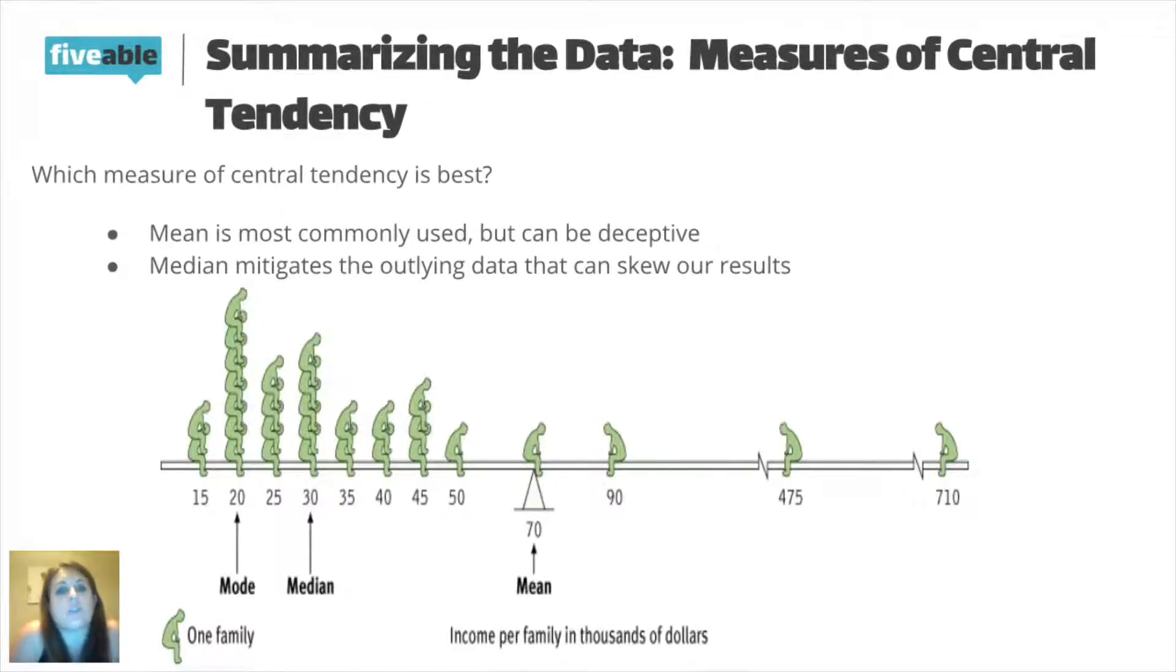The median, which is $30,000, you can see represented in that image, is a much better example of what our average class income is. The mode would, for this one, be $20,000. And typically, you don't see the mode being used a whole lot. You still need to know what it is, but it's usually the mean or the median that are going to be the two most common forms of describing and summarizing the data that we have at hand. So file that into your brain. You have to know the mean can be skewed, and so sometimes we want to use the median instead when we have really far outlying data.